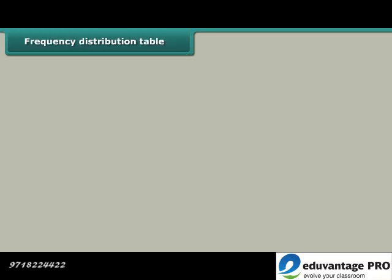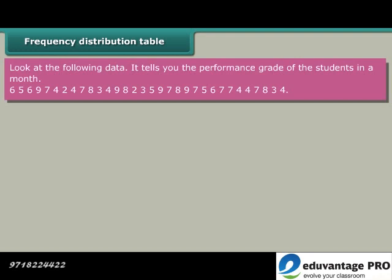Frequency Distribution Table: Look at the following data. It tells you the performance grade of the students in a month: 6, 5, 6, 9, 7, 4, 2, 4, 7, 8, 3, 4, 9, 8, 2, 3, 5, 9, 7, 8, 9, 7, 5, 6, 7, 7, 4, 4, 7, 8, 3, 4.